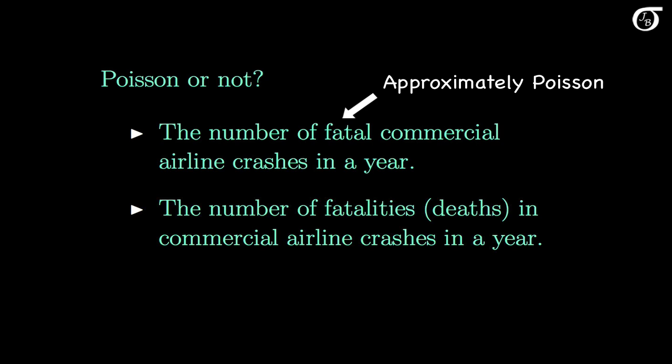How about this very different but related question: would the number of fatalities in commercial airline crashes follow a Poisson distribution? Again we're counting events in a given timeframe, and there are a very large number of people flying, each with a tiny chance of dying on any given flight. But it's not a Poisson. The events are most definitely not occurring independently — if the person two seats away from you is going to die in a fatal plane crash that day, that is very, very, very bad news for you. So the number of crashes might have approximately a Poisson distribution, but the number of fatalities most definitely would not.